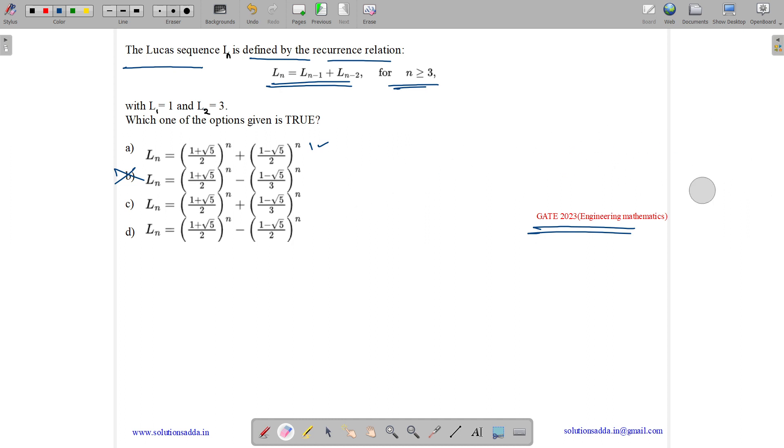Let us see option C. So option C is 1 plus root 5 by 2 for n equals to 1 plus 1 minus root 5 by 3. So LCM is 6, here we have 3 plus 3 root 5 plus 2 minus 2 root 5. So 3 root 5 plus 3 plus 2 is 5, 3 minus 2 is 5 plus root 5 by 6. So this is also not satisfying.